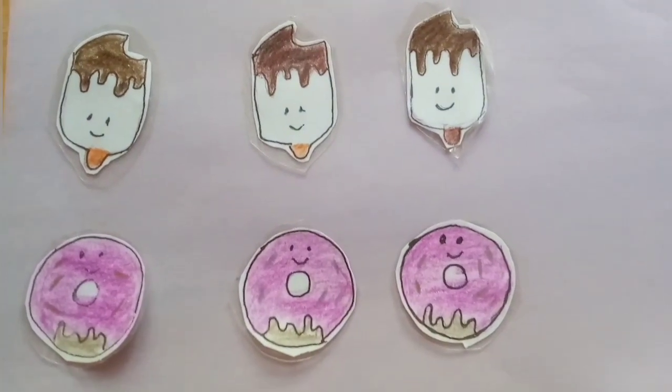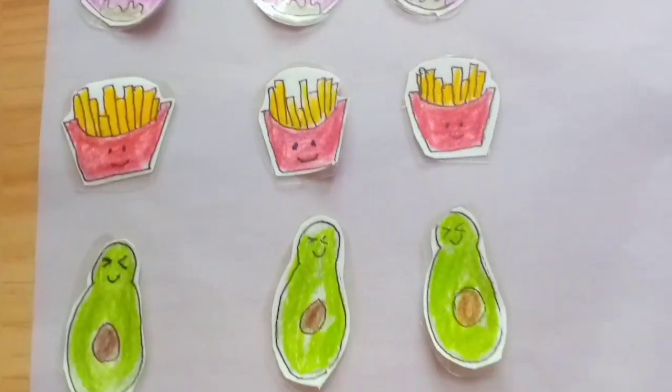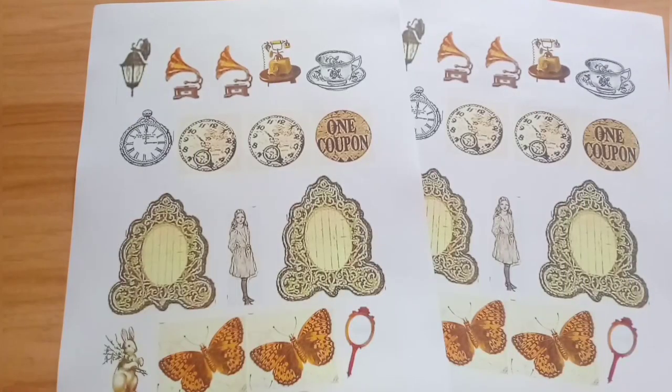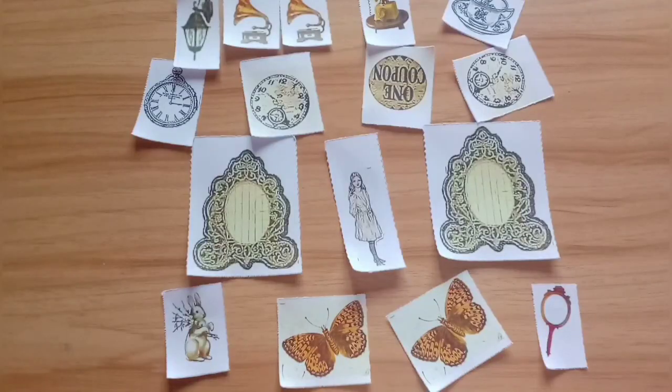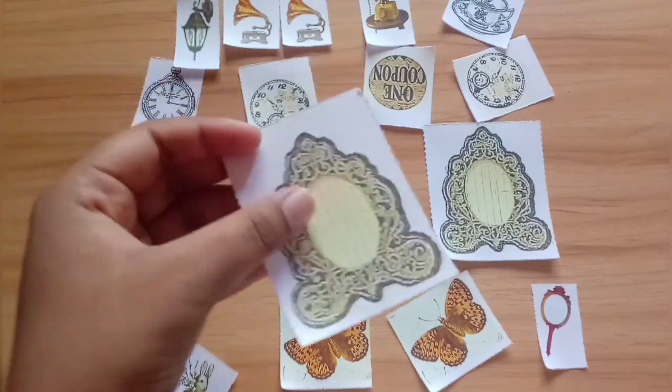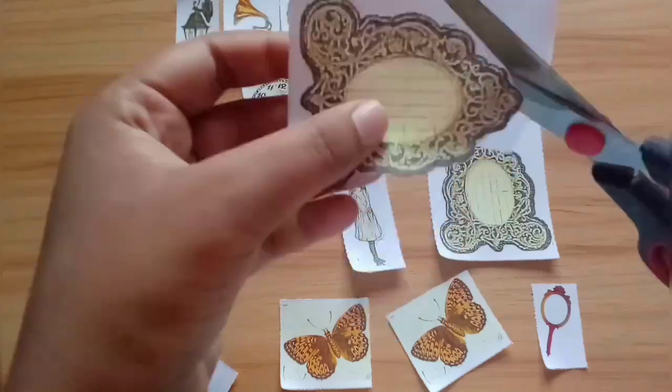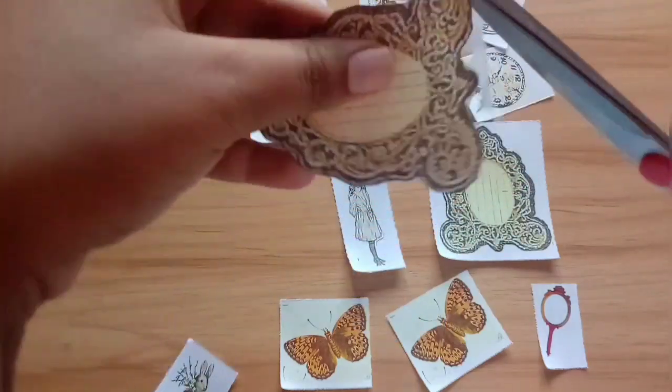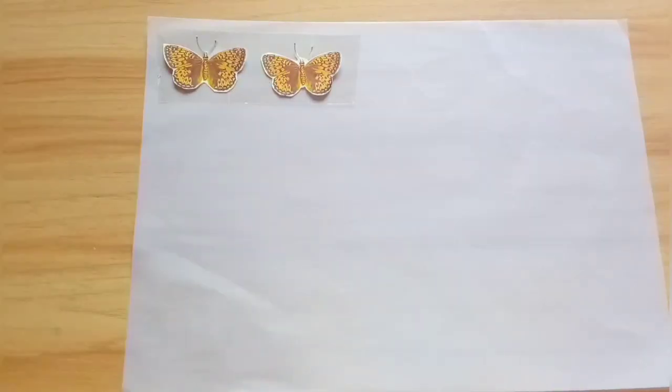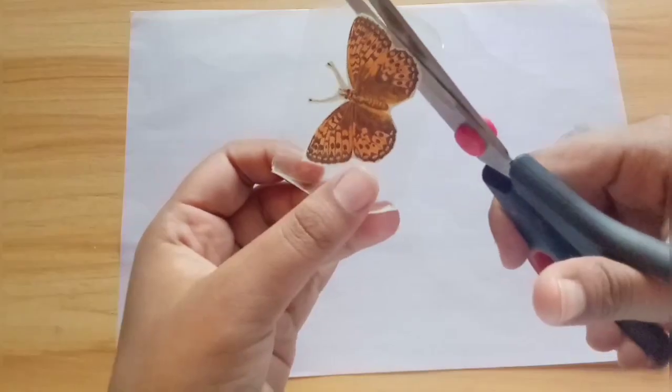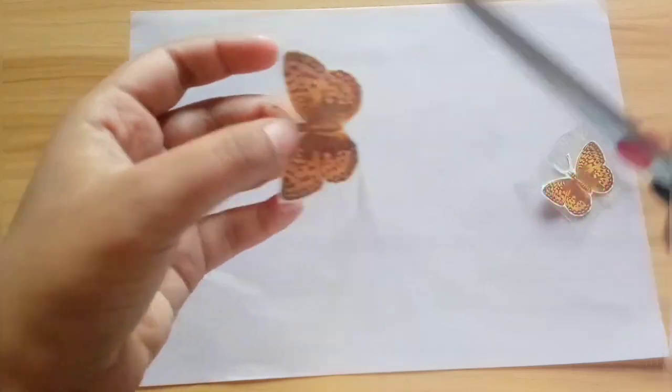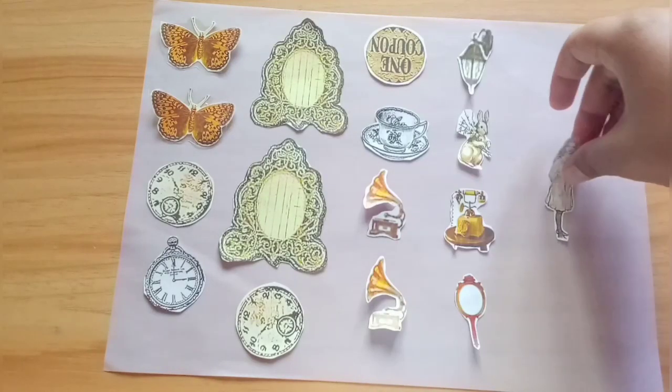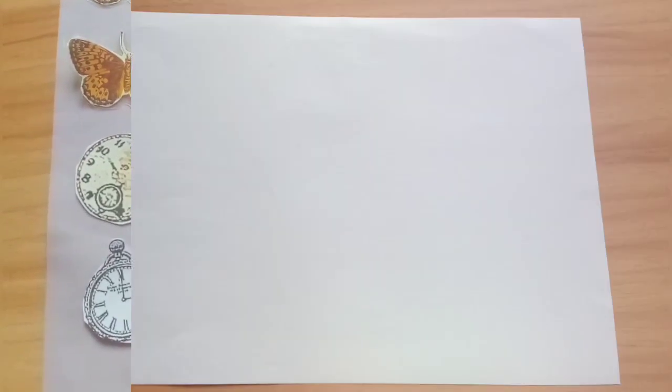The second DIY is for vintage stickers. For this, you'll need the same supplies. I've printed out some stickers from the internet. The process is very similar - cut them into individual pieces, then bring your parchment paper and stick clear tape onto it. Add the stickers onto the tape and place another tape over it. Similar to the earlier stickers, trim them and you have your own vintage DIY stickers.